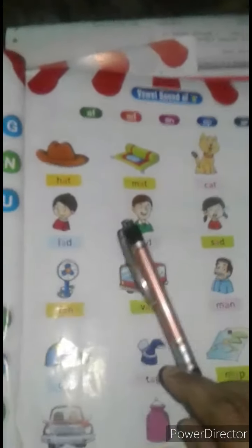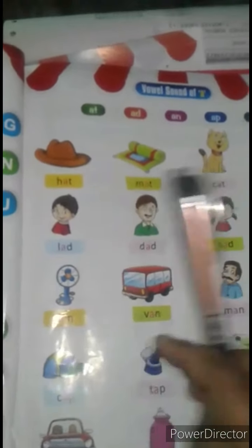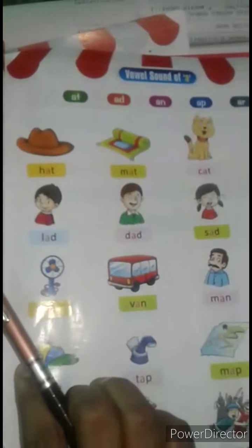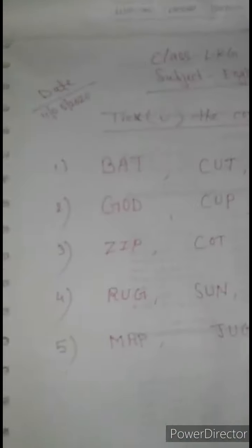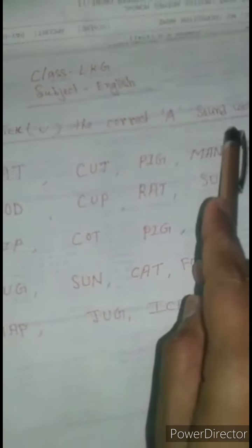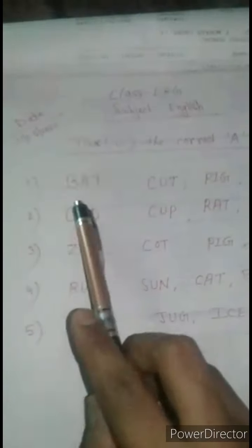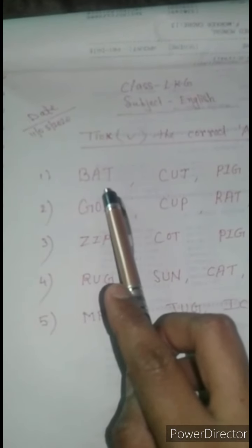So all students, see what you have written in your copy. Tick the correct A sound word. This line has an A sound word. B, A, T — Bat.